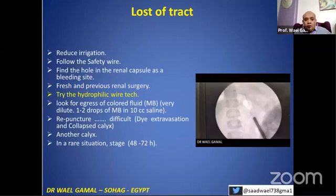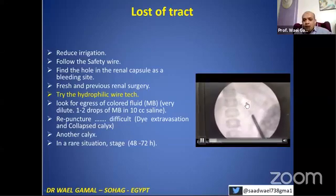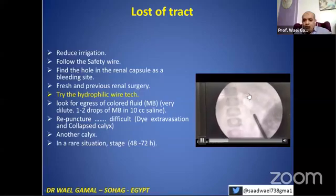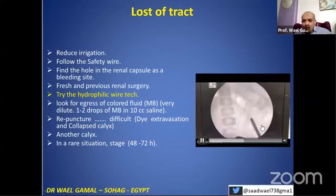How to deal with lost track: you can try this technique. You can occlude the kidney — it is a closed system. We can use a hydrophilic wire from the ureteral catheter to go up and down and try to find the opening and regain the track. This may be successful in the upper calyx and lower calyx, but it is very difficult in the middle one. Here, we pass the zebra wire — we are outside with lost track. The wire coils, searching for its way, and finds the opening in the lower calyx and exits.